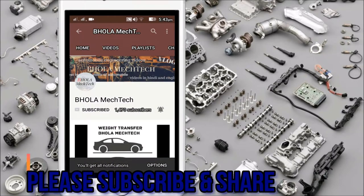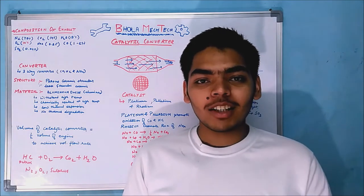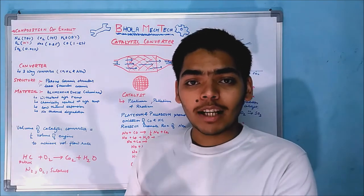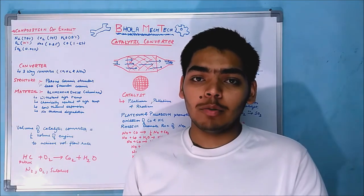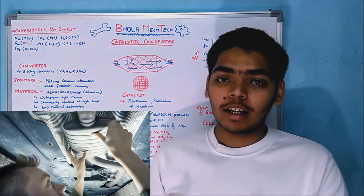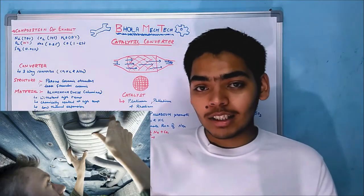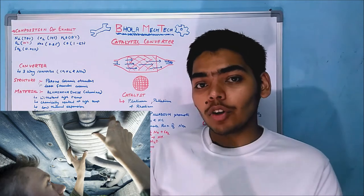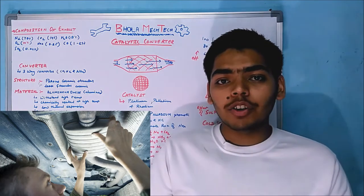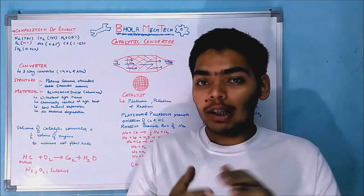Automobile engines are very polluting. To control the pollution and emissions of automobile engines, we use several devices known as catalytic converters. This is the topic we are going to discuss in our whole video. We are going to learn everything about the catalytic converter.